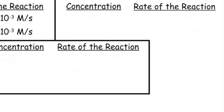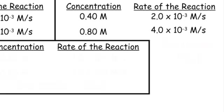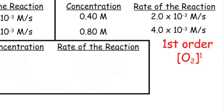We have other kinds of reactions as well. If concentration goes from 0.4 molar to 0.8 molar and the rate goes from 2×10⁻³ to 4×10⁻³, the concentration doubled and the rate doubled — that's called first order. It's to the first power, so doubling the concentration doubles the rate proportionally.